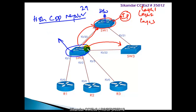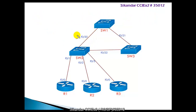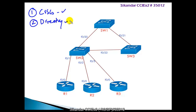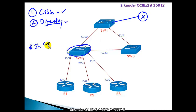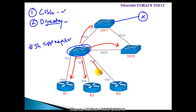CDP only works with Cisco devices — that is one major drawback. The second limitation is that it only provides information about directly connected devices. For example, if you go to a switch and give 'show CDP neighbors,' it will display information only about the directly connected neighbors, not devices further away in the topology.